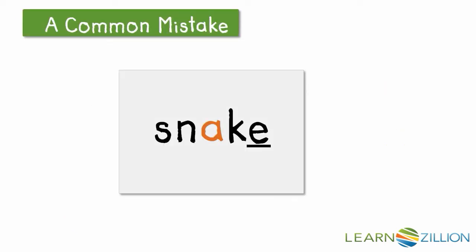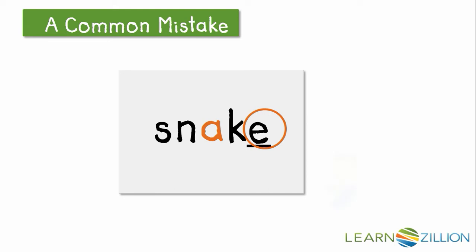A common mistake good readers sometimes make is that they say the sound for the letter e at the end of a word that follows a VCE pattern, or a vowel consonant e pattern. For example, in this word, we do not read this word "snake-e." We read the word snake, and the e is silent.